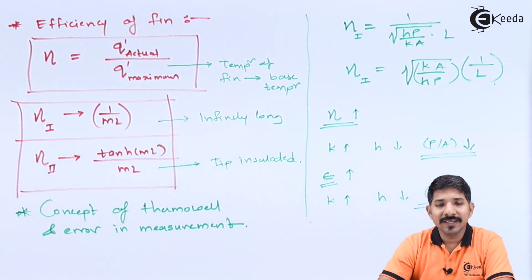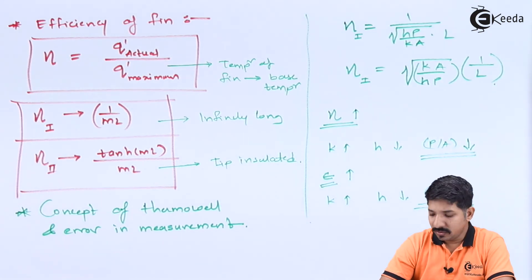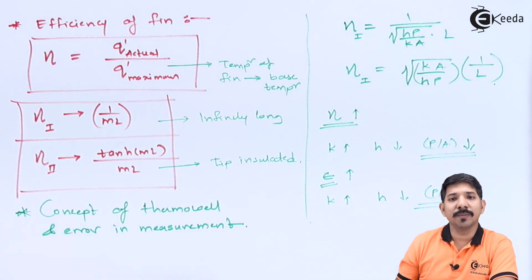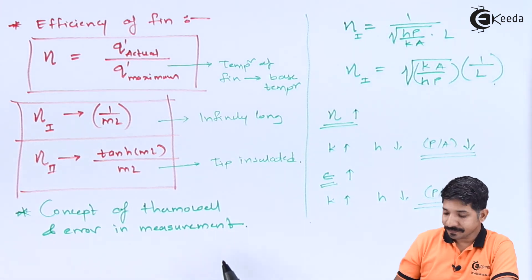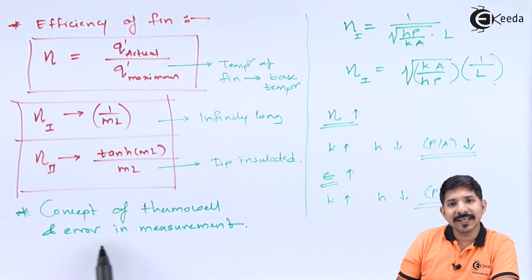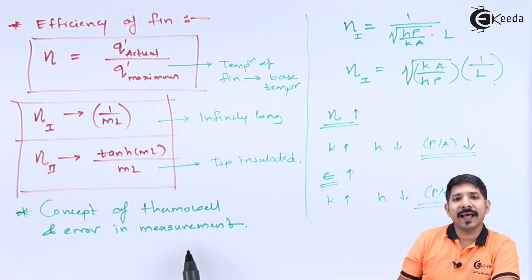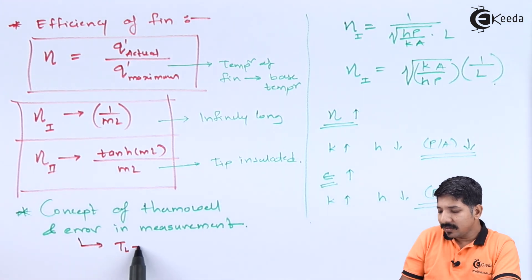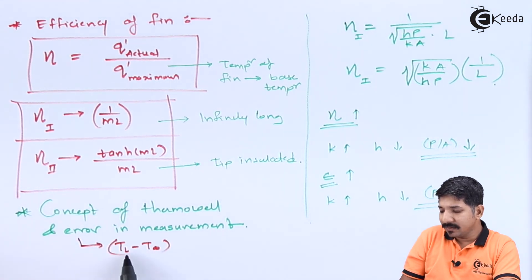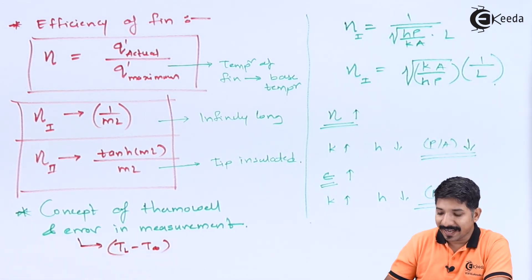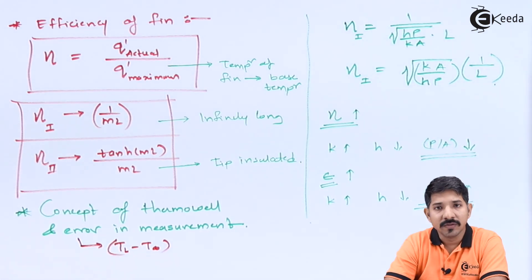The concept of the thermowell is used to find the temperature of fluid flowing through pipes or ducts. There is measurement error associated with this, which can be expressed as the T_L minus T_infinity term used in our expressions. We also solved a problem based on a thermocouple.